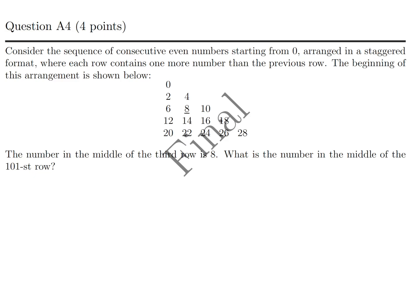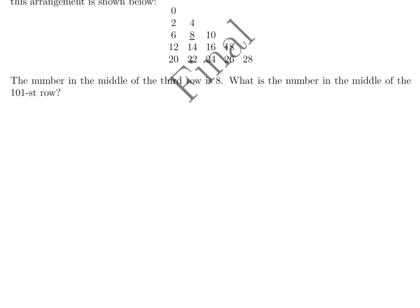Consider the sequence of consecutive even numbers starting from zero arranged in a staggered format where each row contains one more number than the previous row. The beginning of this arrangement is shown below. The number in the middle of the third row is eight. What is the number in the middle of the 101st row? Well, our goal, or at least I hope, is to try to figure out some sort of a pattern because obviously there's no way you're going to write out 101 rows. So this is the first row. This is the second row. Third row. Fourth row. Fifth row. And then eventually you're going to come down to the nth row. I mean, that's what I'm hoping, that I can get some sort of a formula. And then eventually we'll get to the 101th row. And then it will have a whole bunch of entries. It'll have a middle entry. And then it'll have its final entries like that.